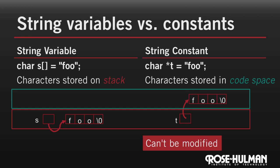On the other hand, any string initialized as a pointer is a string constant. And the actual characters there are stored in a different part of memory that's called code space. Strings declared in this way cannot be mutated. Let's see that happen in Eclipse.